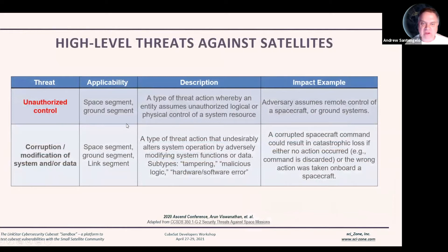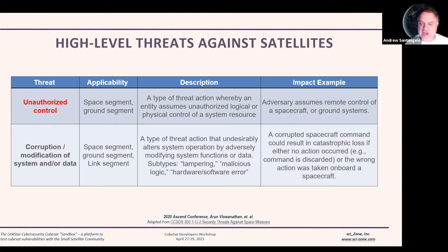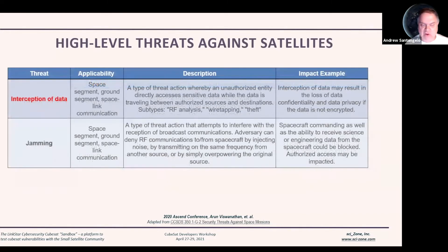When we think of CubeSats and their vulnerabilities, there are high-level threats against any class of satellites besides CubeSats. These tables from the 2020 Ascend Conference summarize very well what those threats can be. Basically, some of the threats include unauthorized control — an attacker can take over a CubeSat and remotely control that vehicle. Or they can access that CubeSat and change, modify, and corrupt data. So you're trying to measure temperatures and may get a temperature you weren't expecting, but that data has been modified by the attacker. You can also have interception of data, where the hacker analyzes, wiretaps, and steals that data.